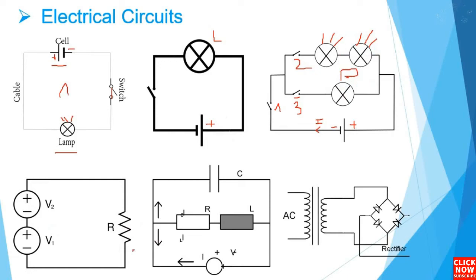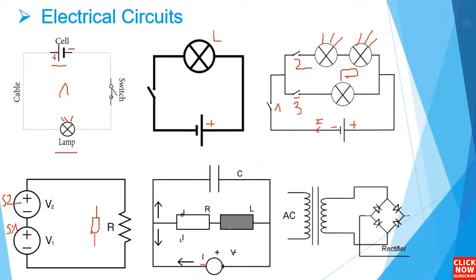Here we have another circuit with a resistor and two voltage supplies. You can find a resistor drawn with either of these two symbols. Here we have another circuit with a power supply, showing the direction of the current, along with a ceramic capacitor, a resistor, and an inductor.